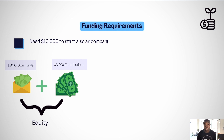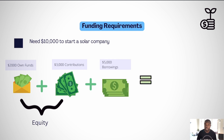Next, he approaches his friends and asks them for a loan with a promise of paying them back with an additional 10%. After reaching out to 50 of his friends, 10 of them decided to loan him $500 each and expect to be paid back $550 as promised. This sums up to $5,000 in borrowed funds and represents the liability in the business.